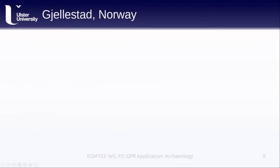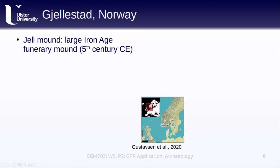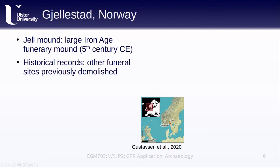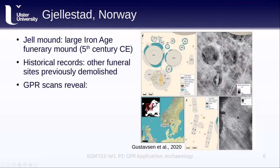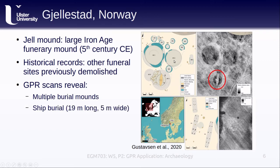Moving north and forward in time slightly, we come to southern Norway, near the town of Jellestad. The nearby Jell Mound is a large Iron Age funerary mound that dates to around the 5th century CE. Historical records from the area indicate that there were at one point other funerary mounds in the area that have been demolished as land was cleared for farming. Using a multi-channel GPR, the authors conducted several surveys around the area. They found a number of features, including multiple burial mounds, as well as evidence for a Viking ship burial with the ship estimated to be about 19 meters long and 5 meters wide, and evidence for post holes believed to be the corner poles of houses and other structures.